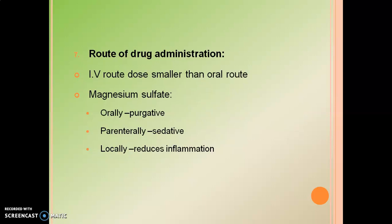Next is the route of drug administration. IV or parenteral drug administration is the best route because it has a higher therapeutic index. For example, magnesium sulfate given orally acts as a purgative, parenterally as a sedative, and locally to reduce inflammation — so one drug can have various physiological actions depending on the route.